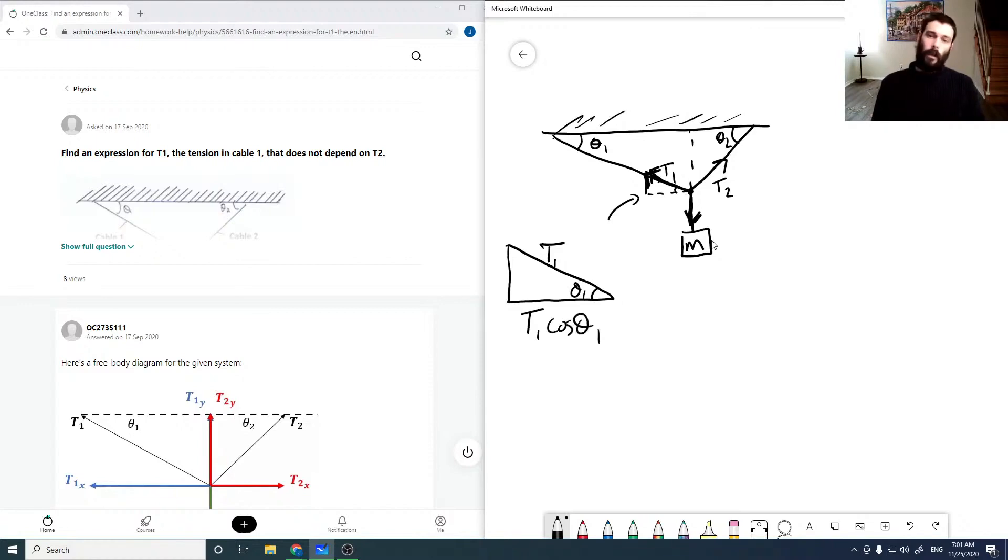Which makes this T1 cos theta 1 and makes that T1 sin theta 1. Similarly, over here on the T2 side, we will have a similar triangle with theta 2. This will be T2 cos theta 2 and this will be T2 sin theta 2. And then the force due to the mass is just F equals mg.